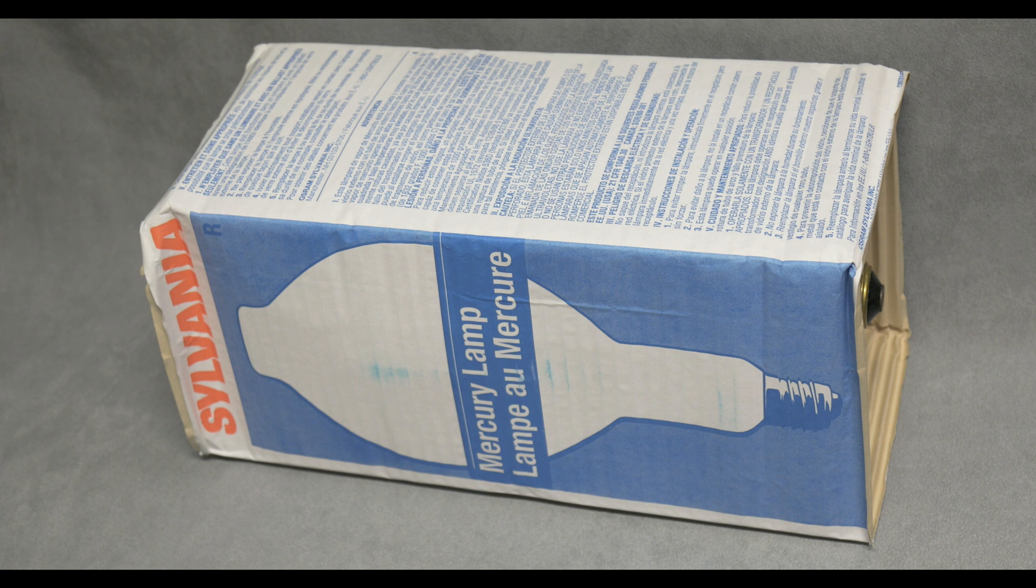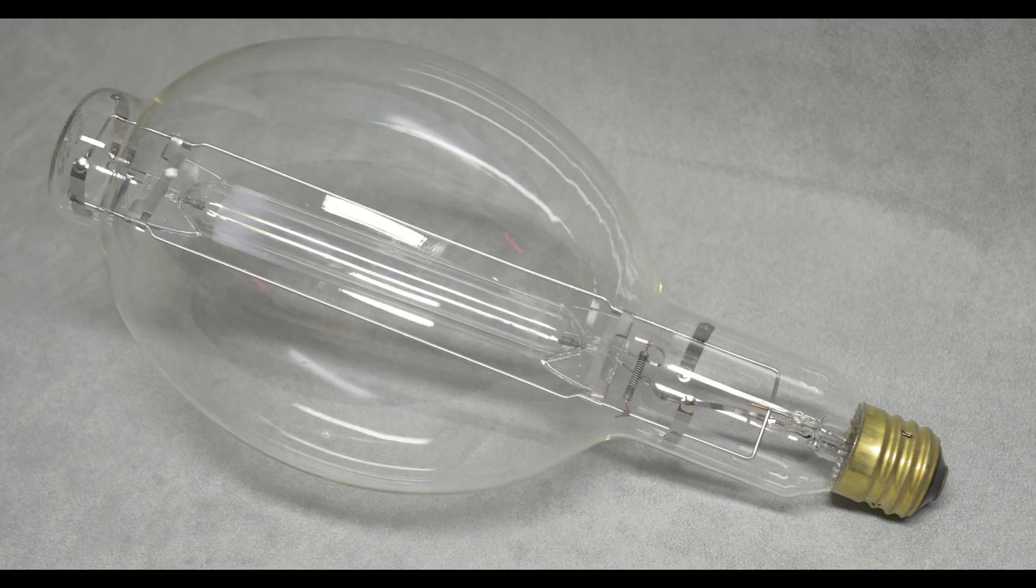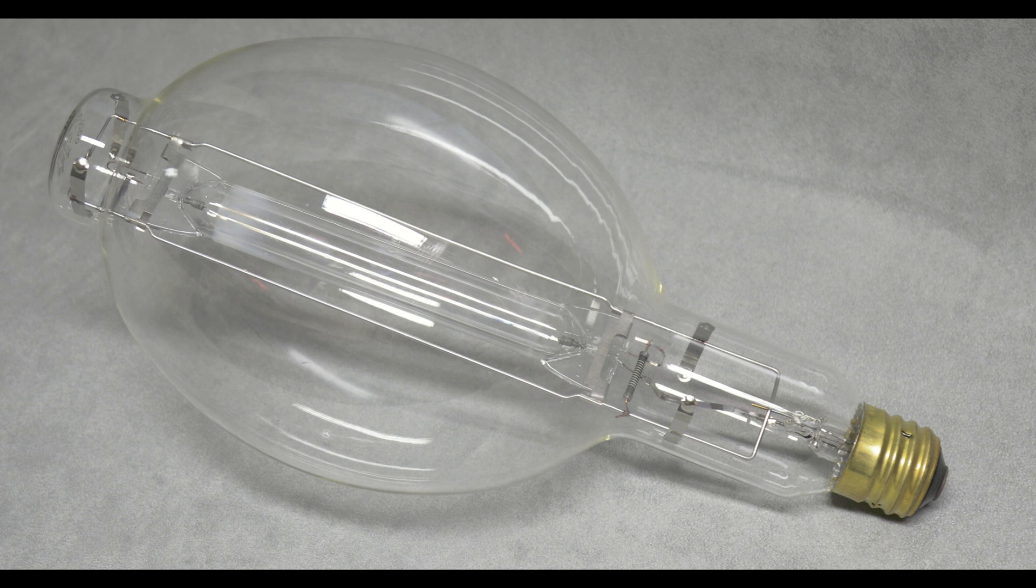G'day folks, it's me again. For tonight's quick video we're going to be looking at this lamp. It's a nice big one, so let's have a closer look. Here it is - a Sylvania H36 GV-1000 made in the USA. It's a clear 1000 watt mercury vapor lamp with no color correcting phosphor layer on the outer envelope.